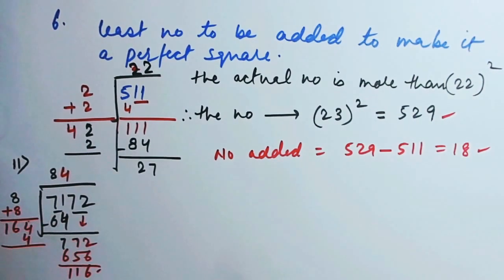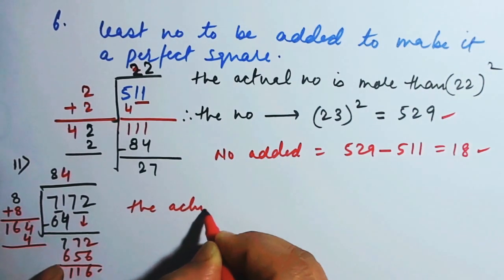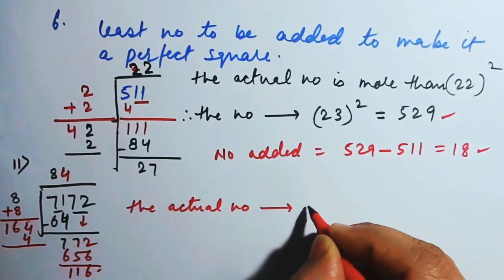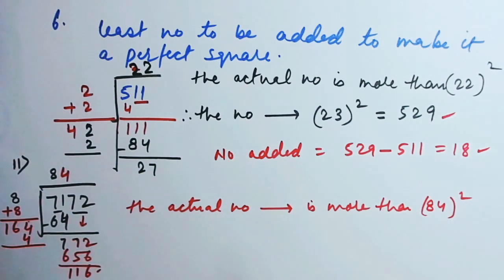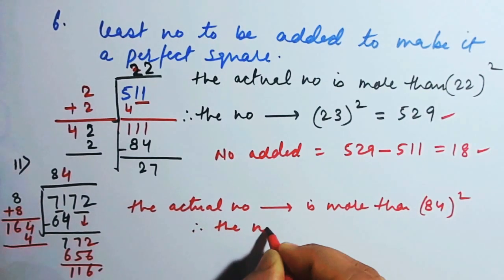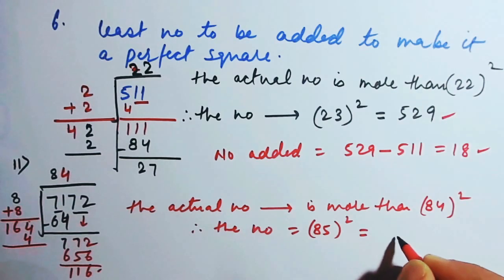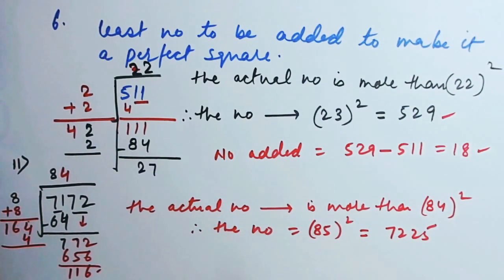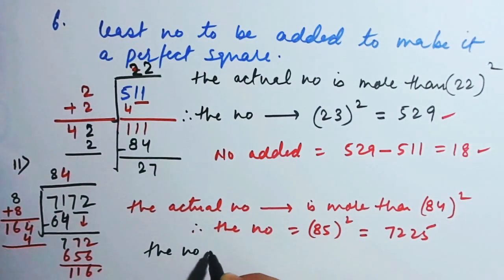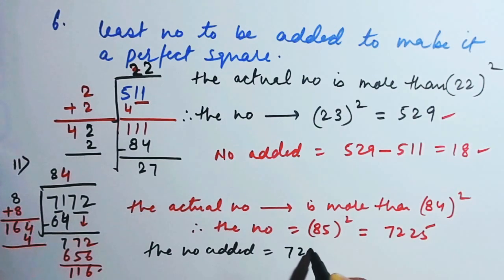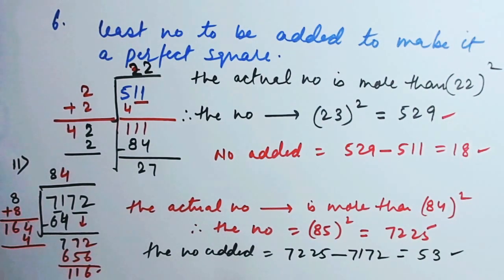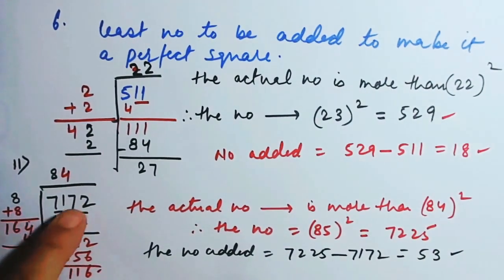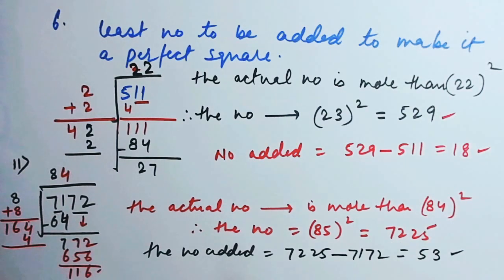It is very clear that the actual number is more than 84 squared. When the actual number is more than 84 squared, that means the number is 85 squared. So what is 85 squared? 85 squared is 7225. What should be added to 7172 to make it 7225? The number to be added is the difference: 7225 minus 7172, which gives you 53. So 53 should be added to 7172 to make it 7225, which is a perfect square.